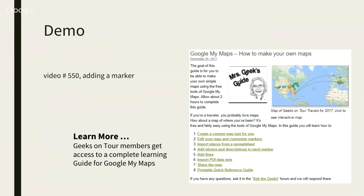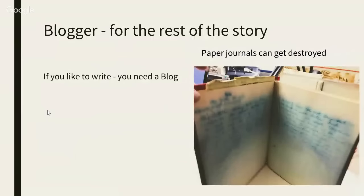I love My Maps — we've kept a map every year since 2003. It's so easy to go back and say 'when were we up in Washington state?' and just scroll through the map. If you want to learn more, we have a whole series of tutorial videos on how to use Google My Maps on our website for members.